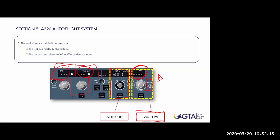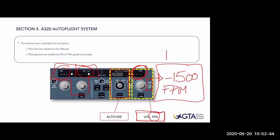Then we have the LOC push button, used to track localizers, and the approach push button. The difference between them is that LOC gives localizer only, while the approach button gives localizer and glide slope. To fly an ILS, we press the approach button; for a localizer-only approach, we press the LOC button. The approach button is also used for non-precision approaches flown on the principle of Final APP - a nice function to fly non-precision approaches like ILS.